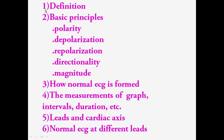Let me give you the outline of what we're going to look at today. I'll start with the definition, then basic principles — which include polarity, depolarization, repolarization, directionality, and magnitude. Then we'll look at how the normal ECG is formed, measurements of graphs, intervals, duration, then leads and cardiac axis, and lastly the normal ECG at different leads — also called 12-lead interpretation.